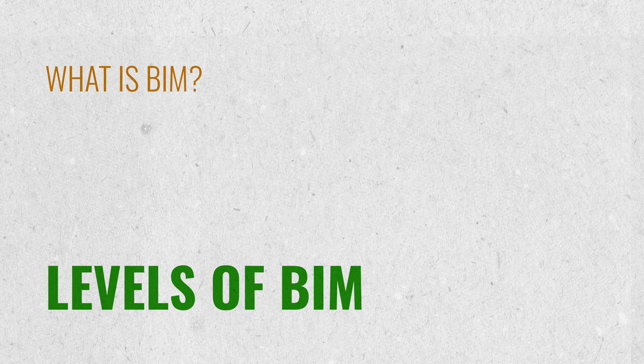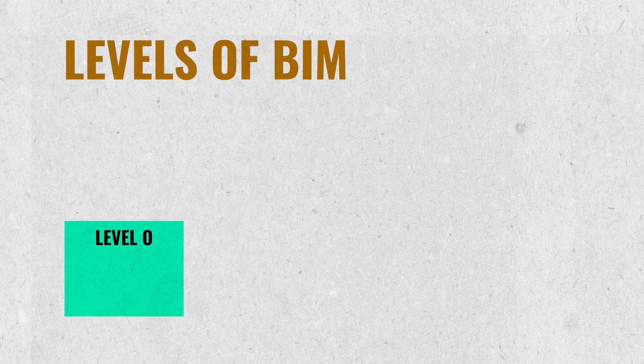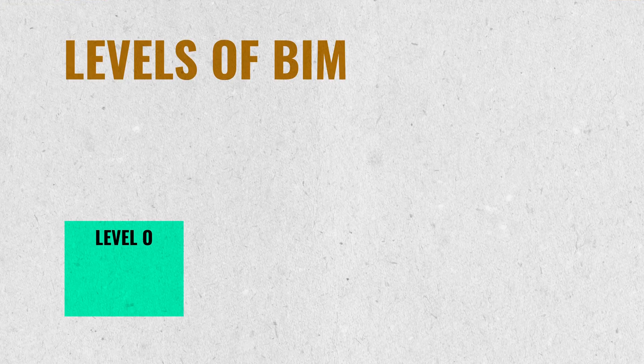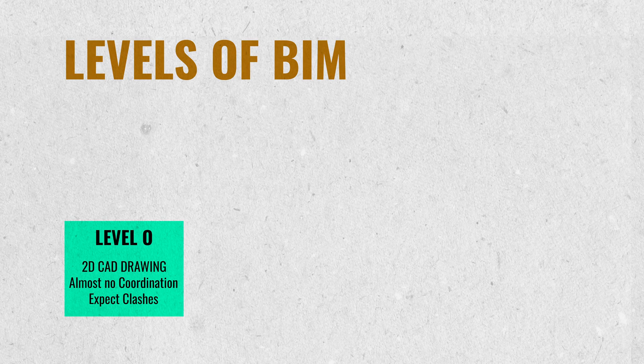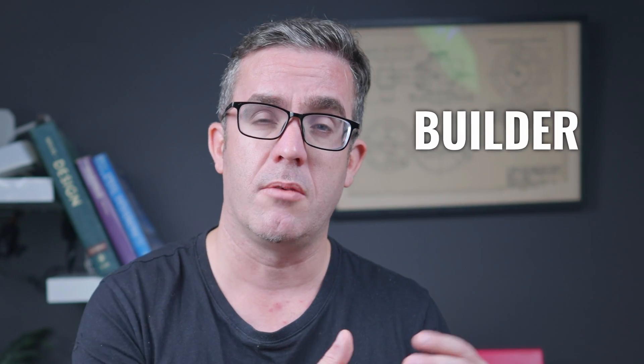There are a couple of terms in BIM modelling you need to understand: levels and LOD. There are primarily four levels of BIM, starting at zero and moving all the way to level three. Level zero is just a 2D CAD drawing — specific plans and elevations that are not necessarily fully coordinated with the architect. There's no 3D cross-coordination or clash detection; you're just trying to match up drawings and it's up to the builder to make sure the building is built correctly.